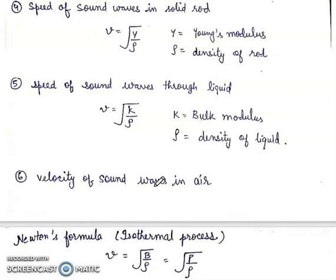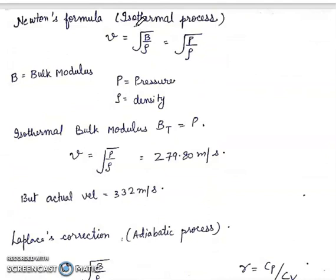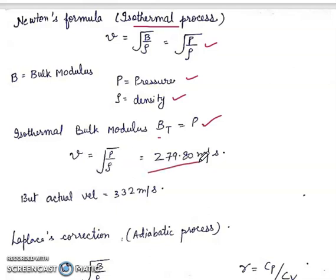Next is velocity of sound waves in air. First, Newton's formula, which follows an isothermal process: V = √(B/ρ), where B is bulk modulus. Since isothermal bulk modulus Bt equals pressure, V = √(P/ρ). When values are substituted, velocity comes out to 279.80 m/s, but the actual velocity is 332 m/s. So Newton's formula is not correct.